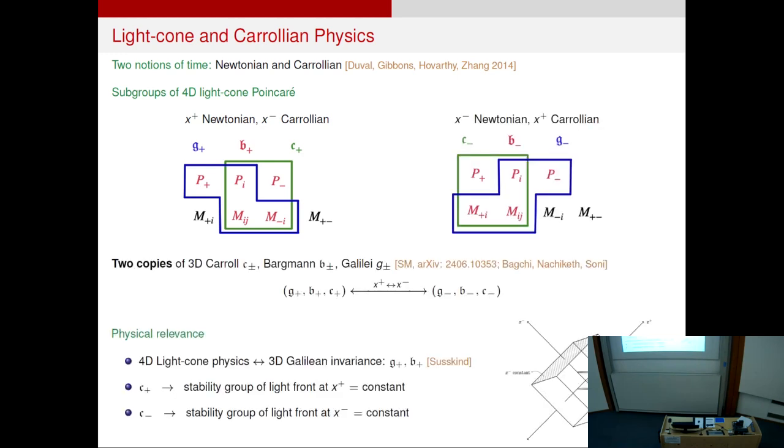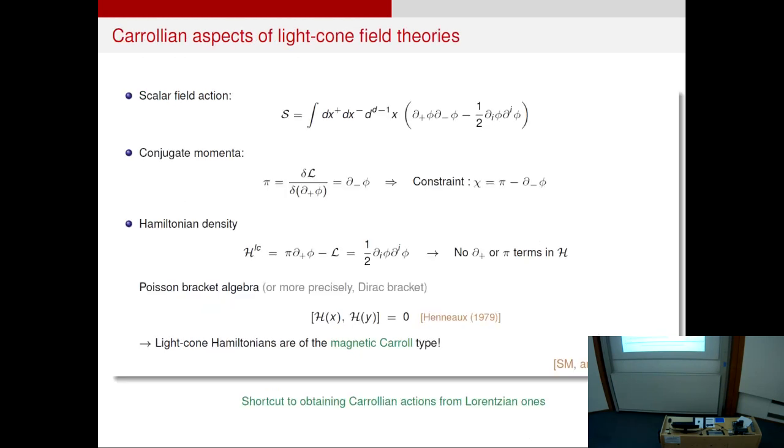Now, there are actually two copies of these kind of subalgebras because you can take the other way around. You can choose x minus to be Newtonian and x plus to be Carrollian. Then you have a different set of Bargmann, Carroll, and Galilean algebra. And these subgroups have different physical relevances. For instance, the Carroll groups are the stability groups of the two light fronts. I will just quickly show you one nice consequence of the Carrollian aspect of light cone field theories.